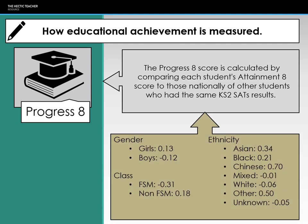In Progress 8 terms, girls are making more progress than boys — the amount of progress girls make is almost equal to the lack of progress boys make. Asian and Black students are making more progress than their attainment figures suggest, which is why the gap is closing. Mixed and white students are in negative figures, as are free school meal students, while advantaged students score positively.